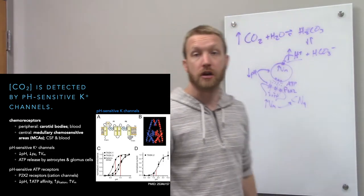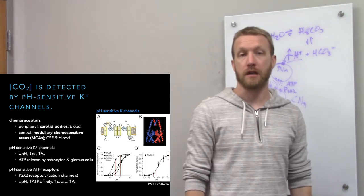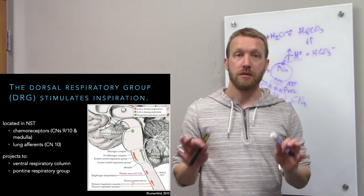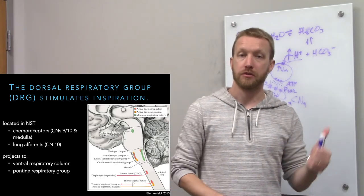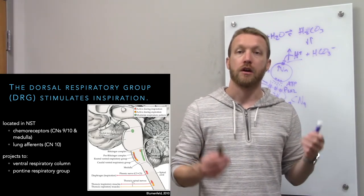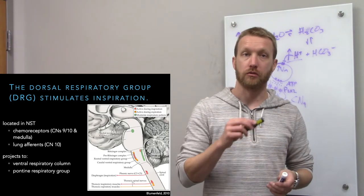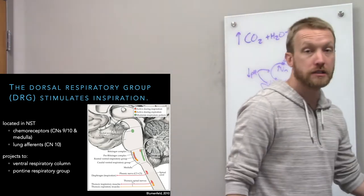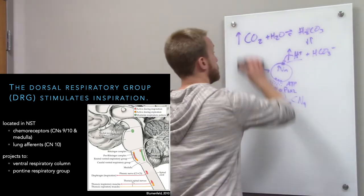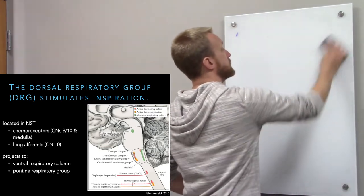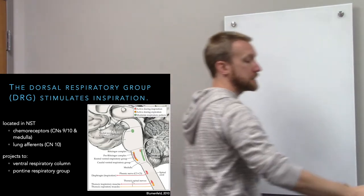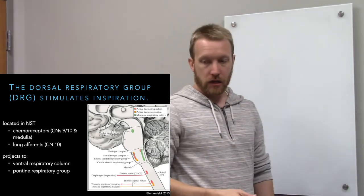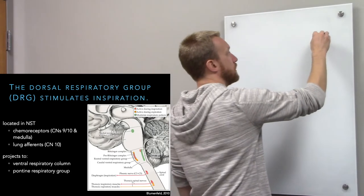So we detect a drop in pH, which tells us we're building up too much carbon dioxide — it's probably time to breathe. Input from those chemoreceptors, whether in the medulla or on cranial nerves, arrives at the dorsal respiratory group in the nucleus of the solitary tract. Remember, that's the sensory nucleus — solitary, sensory.